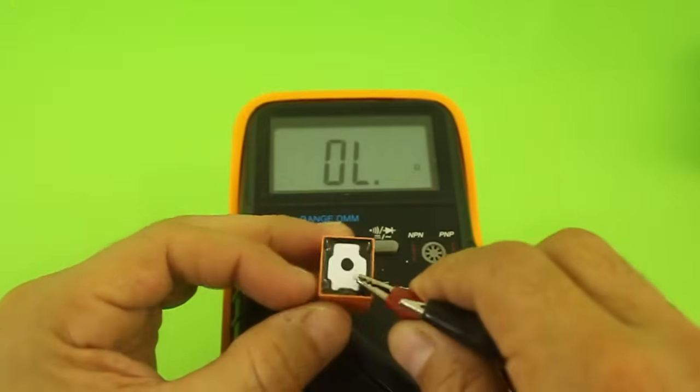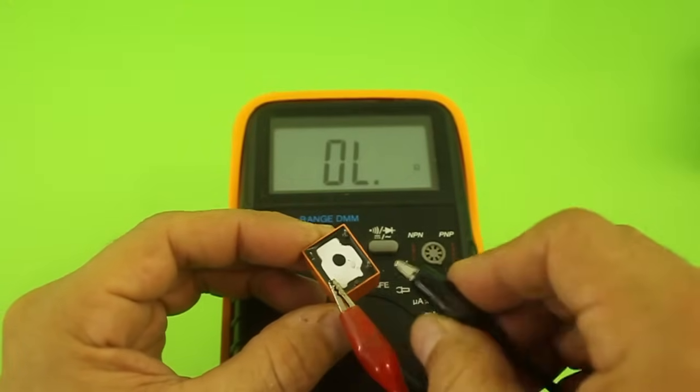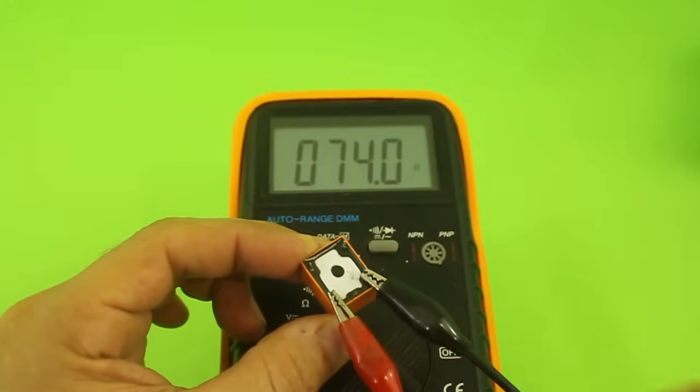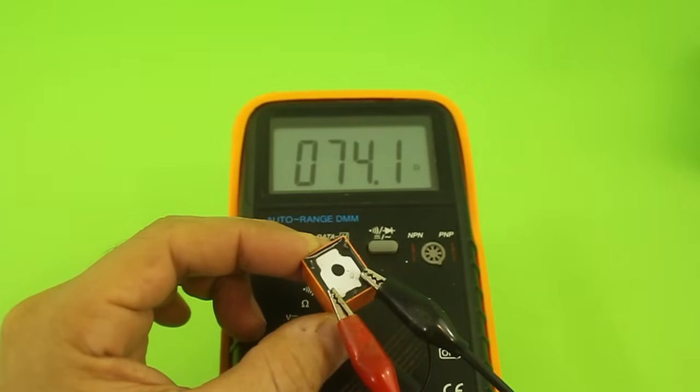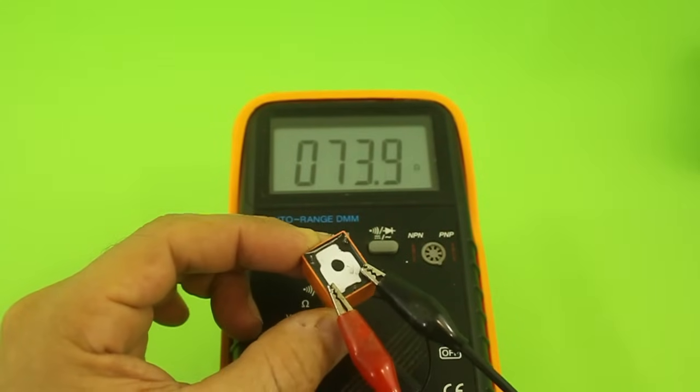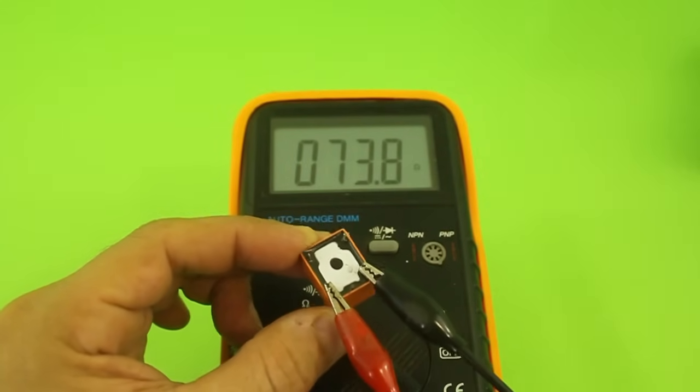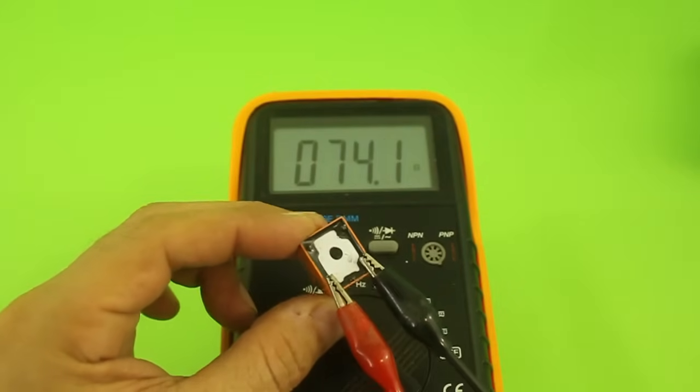nothing, another pair and here we can see 74 ohms. So these two correspond to the contacts of the coil.